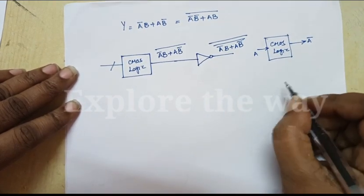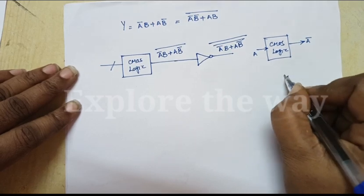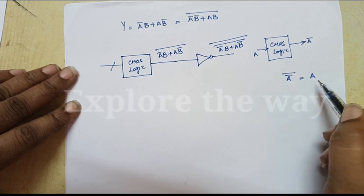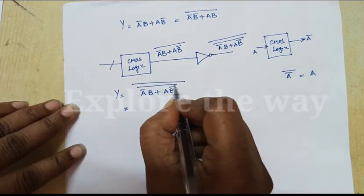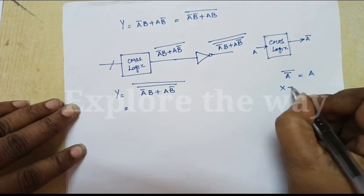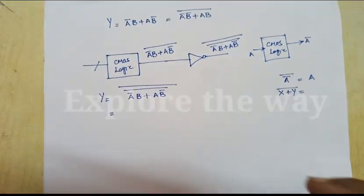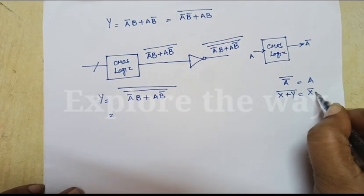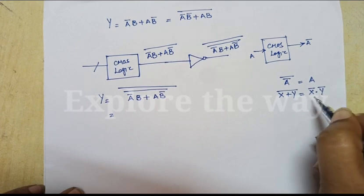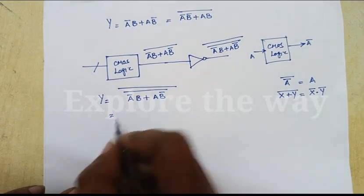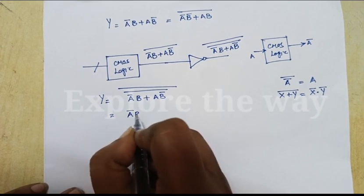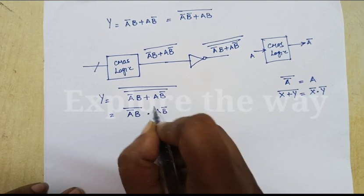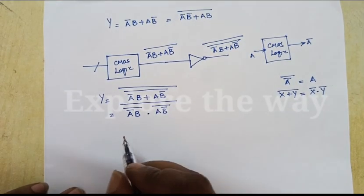Actually in Boolean algebra we have the involution theorem: the complement of complement of a variable is equal to the variable itself. If you see the first complement, which is like (X + Y) whole bar — from De Morgan's theorem, (X + Y) whole bar equals X̅ · Y̅. Applying this theorem, we get (A̅B) whole bar · (AB̅) whole bar, which is the whole complement.